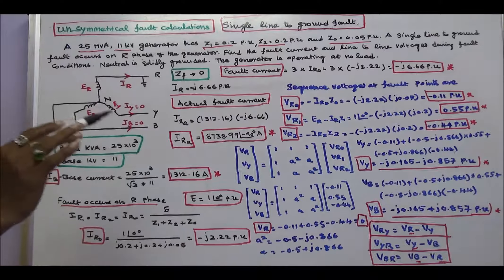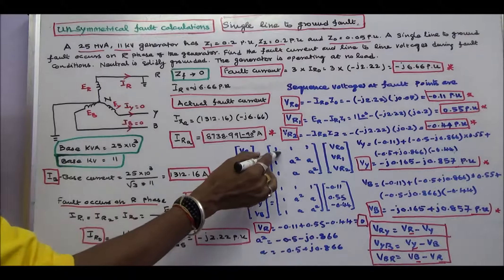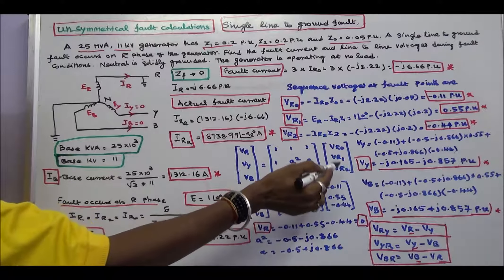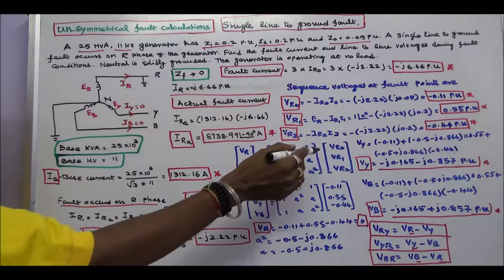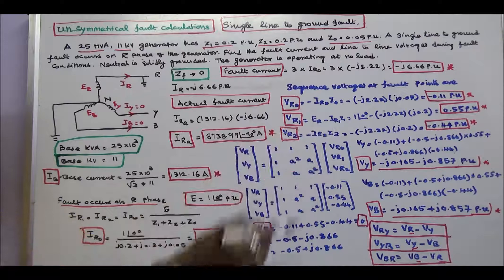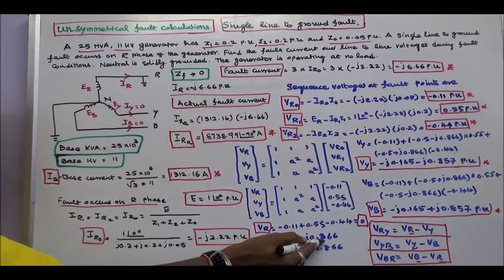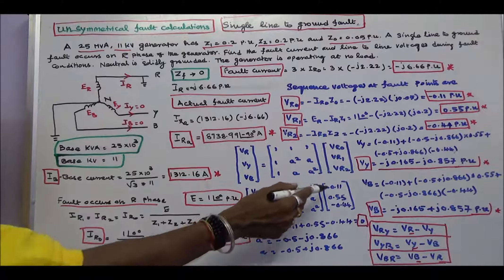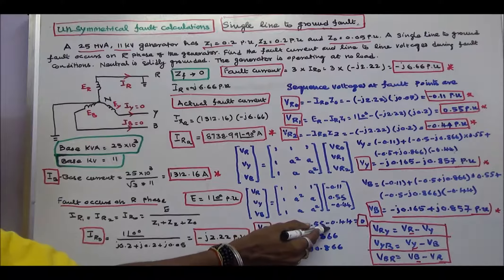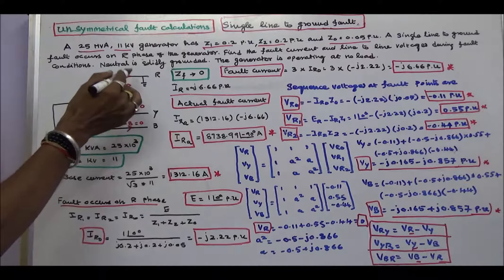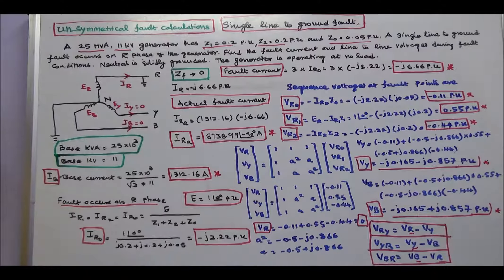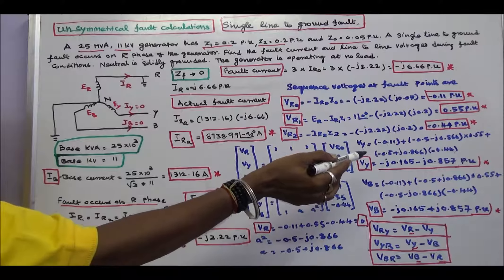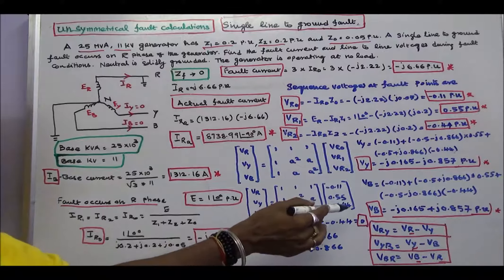VR, VY, VB are the per-phase terminal voltages, and ER, EY, EB are the per-phase generated EMF values. Using the symmetrical components transformation matrix with a-squared equal to minus 0.5 minus j 0.866 and a equal to minus 0.5 plus j 0.866, we get VR equal to minus 0.11 plus 0.55 minus 0.44, which equals 0. A fault occurs on phase R, confirming VR equals 0.